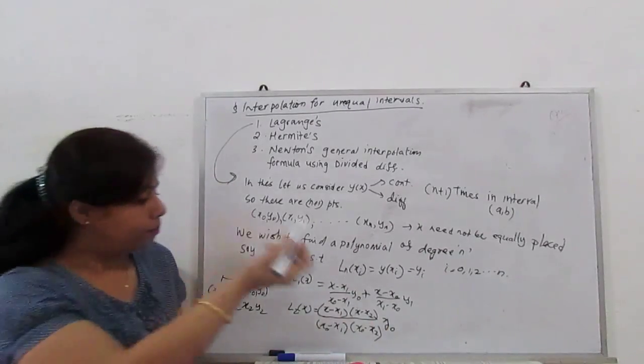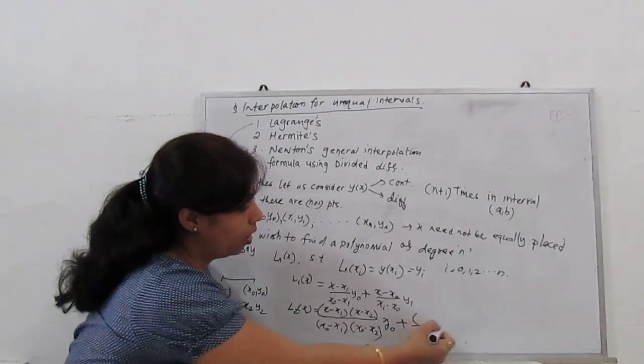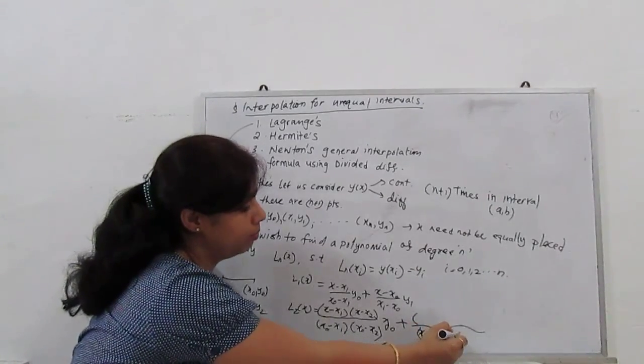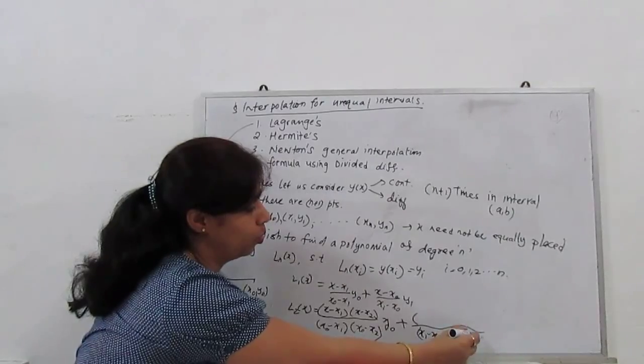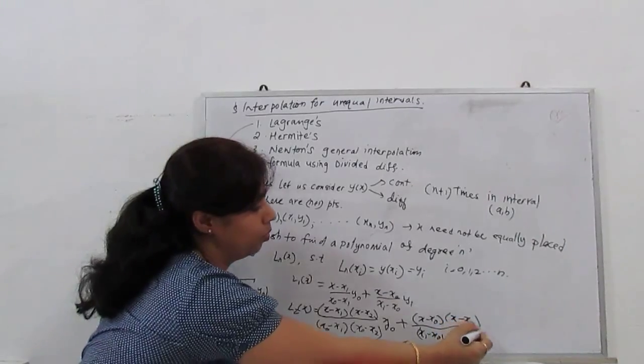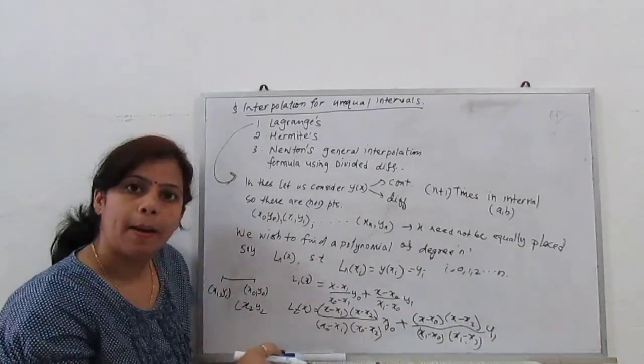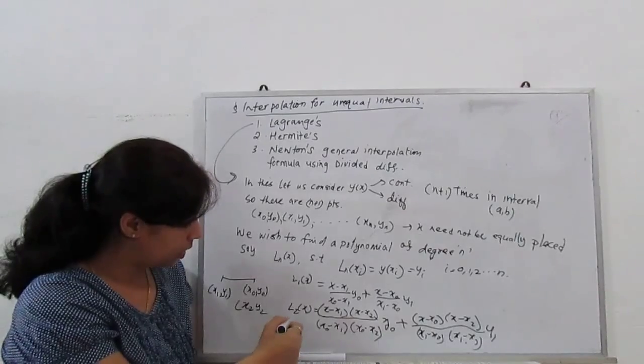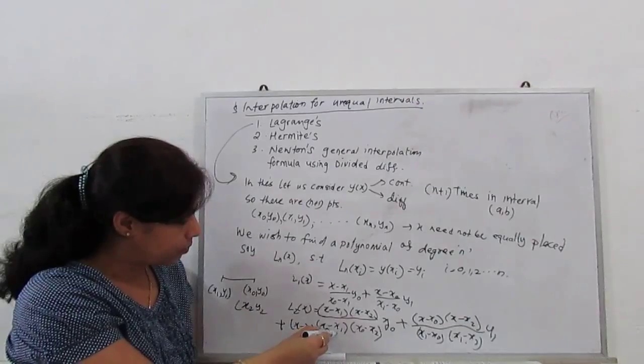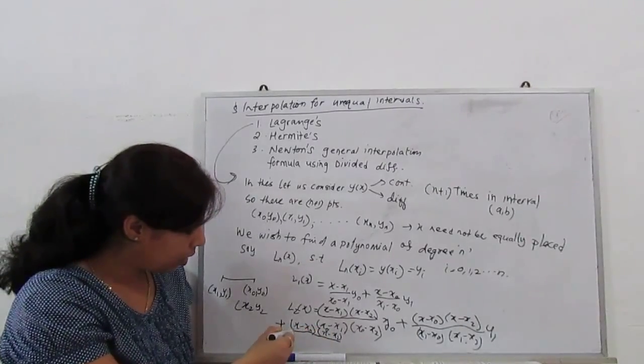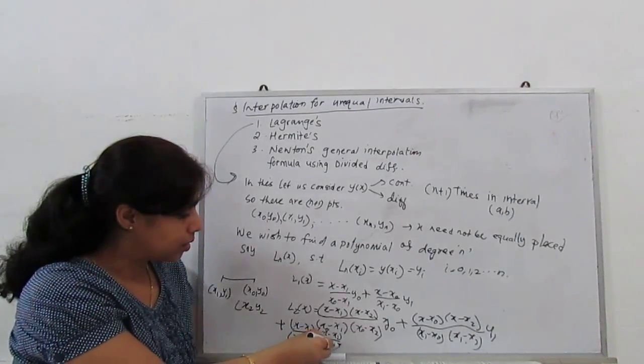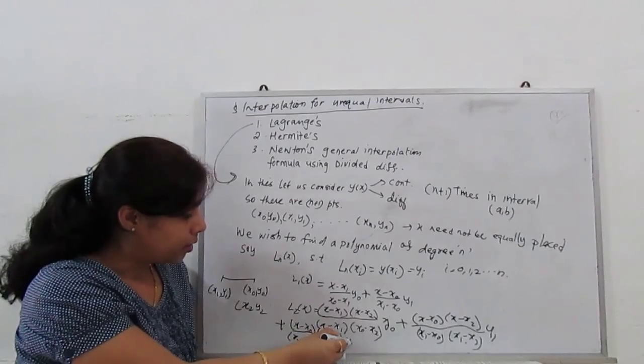Plus next term for x1. So (x-x0)(x-x2)/(x1-x0)(x1-x2) times y1 plus (x-x0)(x-x1)/(x2-x0)(x2-x1) times y2.